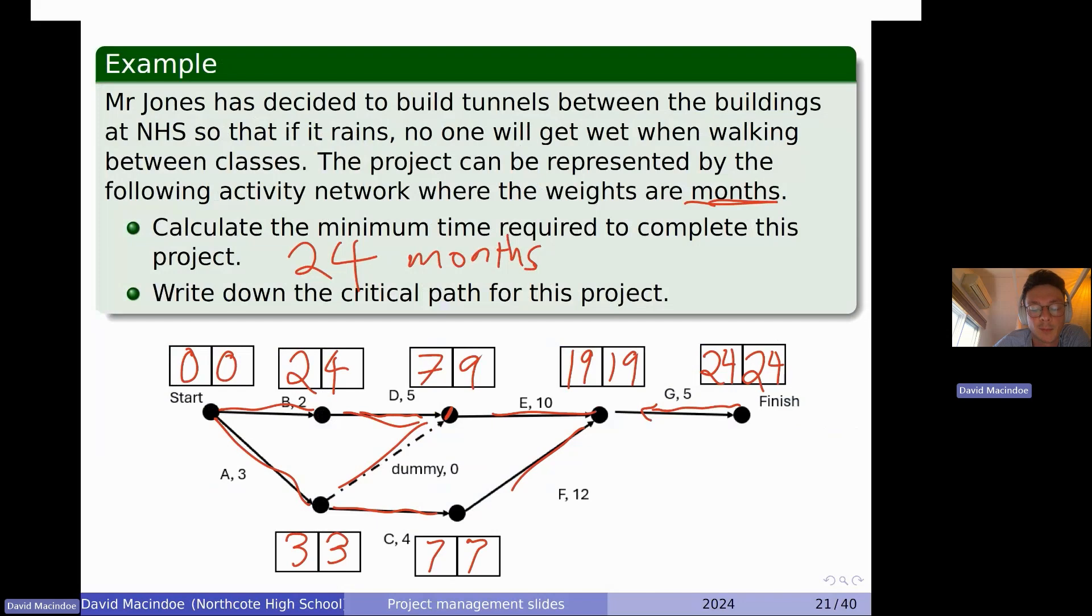Now our critical path is where our float times are zero. That is where your EST and your LST are the same. There's only a few spots where it's not the same. So we can see that the float time is going to be zero from here, and then you're going to get zero down here, here, here, here. So what I would do is if I'm writing this out, I'm just going, okay, it's start and then I'm doing A. I'm going to go to C next, then to F, then to G. And that is my critical path.